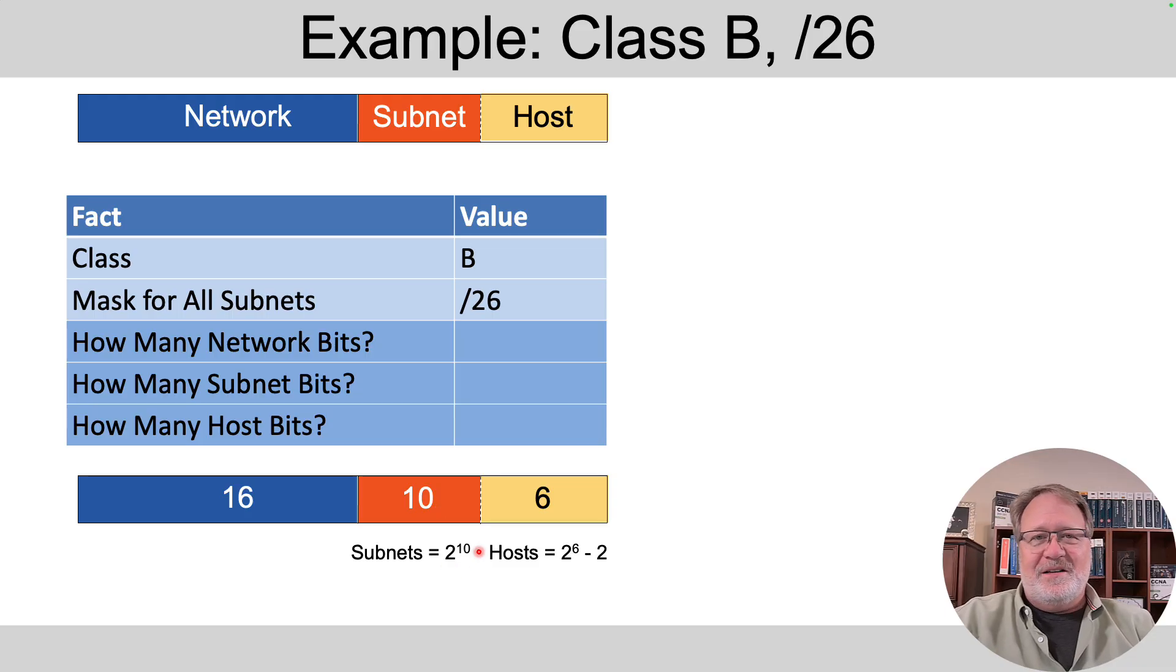Then we do the math, 2 to the number of subnet bits, 2 to the 10th for the number of subnets, 2 to the number of host bits minus 2 gives us 62 hosts per subnet.